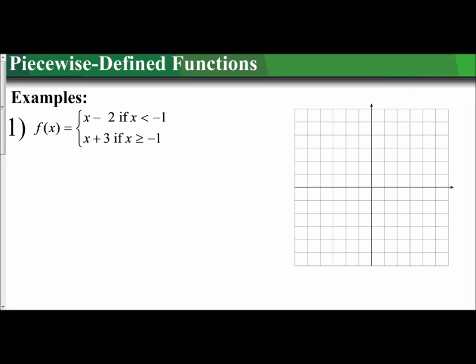In the following video, we're going to examine how to graph a piecewise defined function. We're going to use the point-slope approach in order to graph these, which means we'll first identify the starting point and then use the slope to find the other points from there. The key for the slopes is that you're going to have to be careful of the boundary or condition for each portion of the piecewise function.